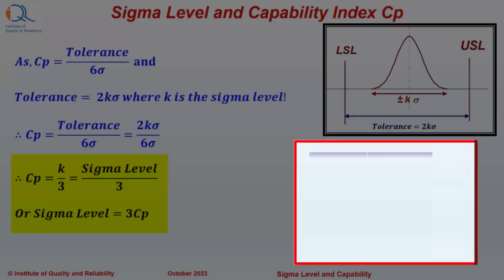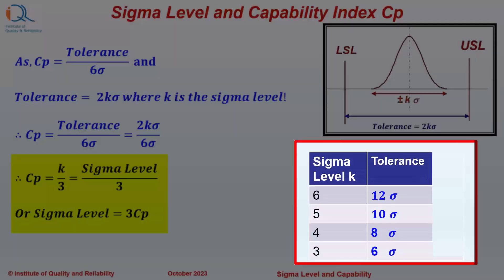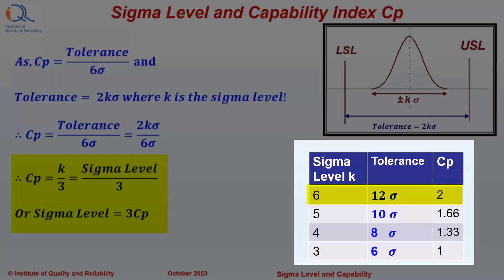Let us look at a table of Sigma Level versus Tolerance and the CP values. For Sigma Level of 6, CP will be one third of 6, that is 2. For Sigma Level of 5, it will be 1.67. For Sigma Level of 4, CP will be equal to 1.33, and for Sigma Level of 3, CP will be equal to 1.